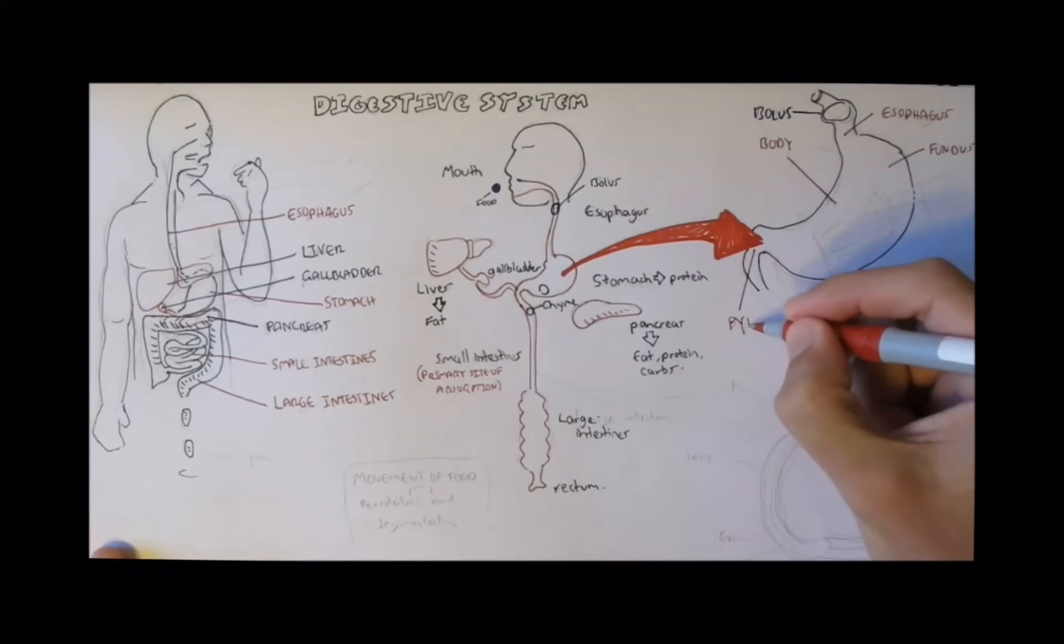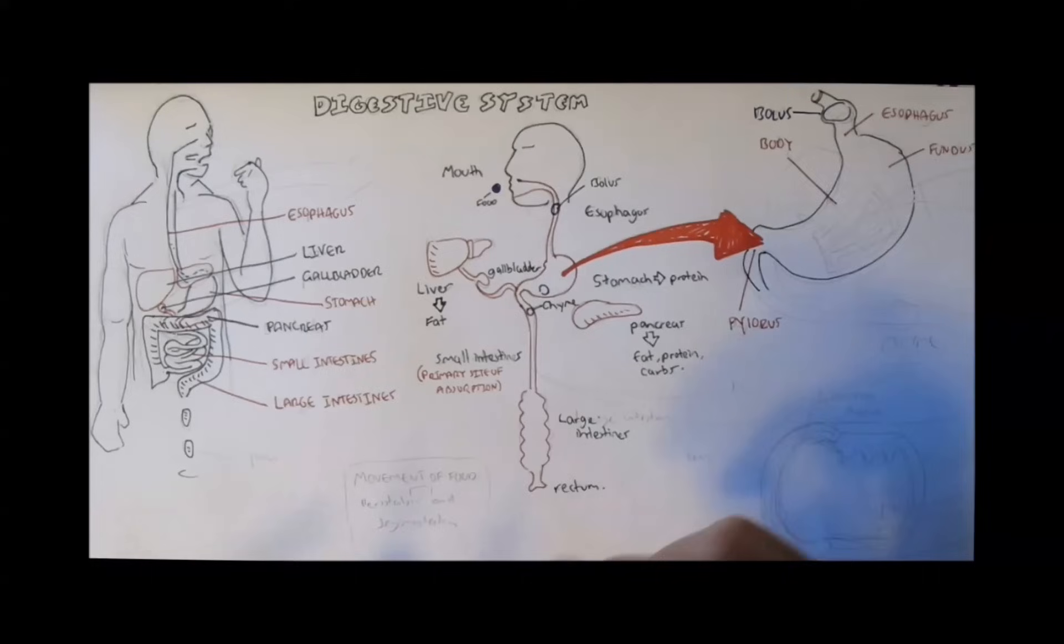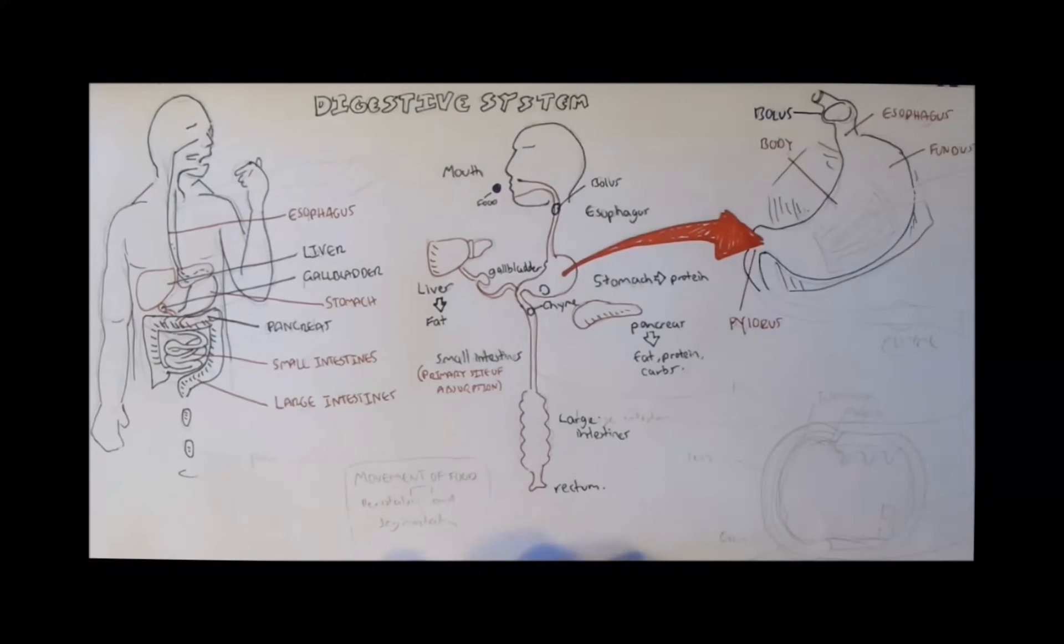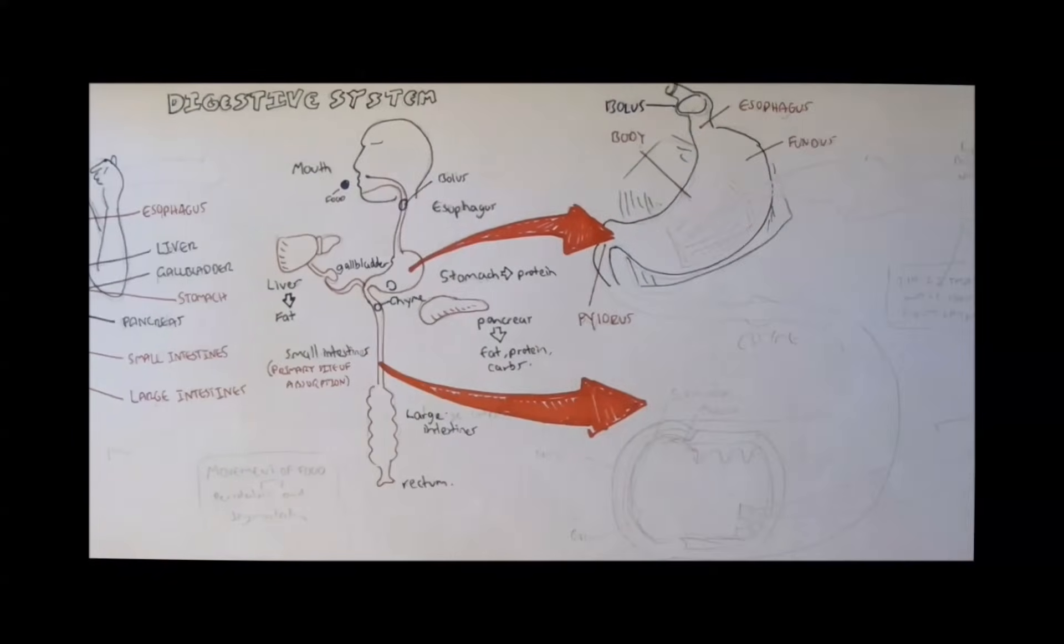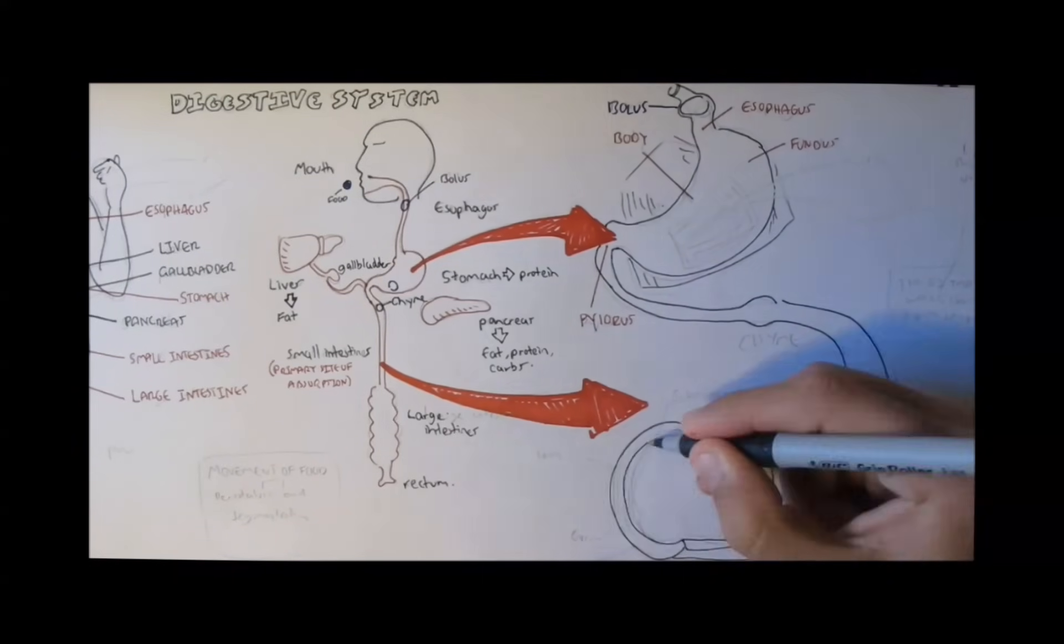And it will firstly arrive at the part of the stomach called the fundus. And then it will travel through the body and leave the stomach through the pylorus sphincter, the pylorus, to the small intestines as chyme.